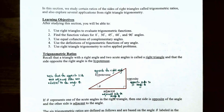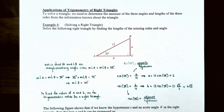In this video we're going to talk about how to use right triangle trigonometry to solve applied problems — applications of trigonometry of right triangles. If you want to solve a triangle, we need to determine the measure of all three angles and the lengths of all three sides from the information that's given in the problem.